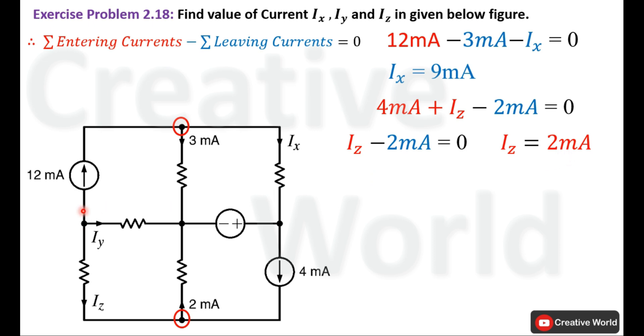Now we will move to the next node. On this node, all three currents are leaving. One is 12 mA, the other current is Iy, and the third one is Iz. So we will write Kirchhoff's Current Law equation for this particular node. All currents are leaving. That's why all currents are taken with a minus sign. Minus 12 mA minus Iy minus Iz.